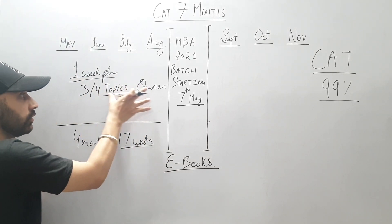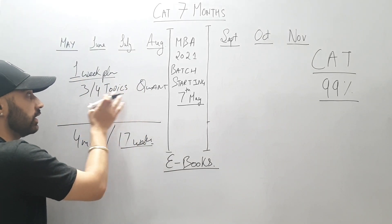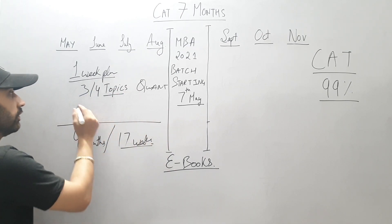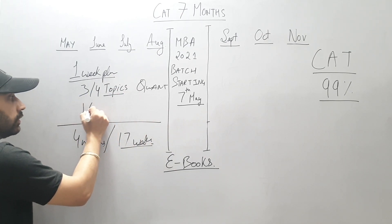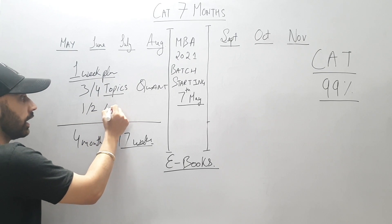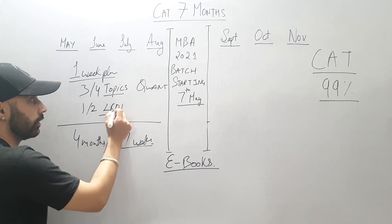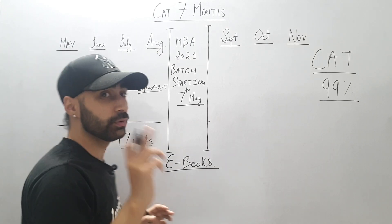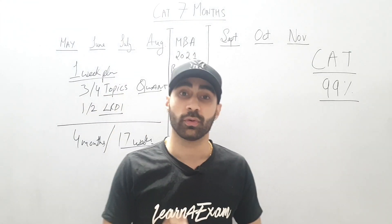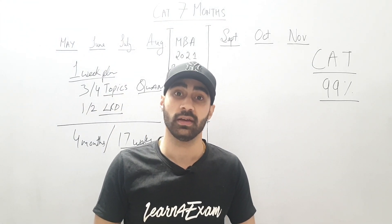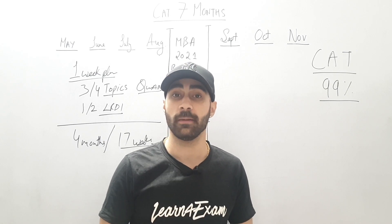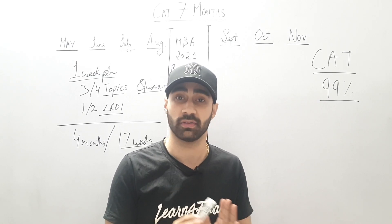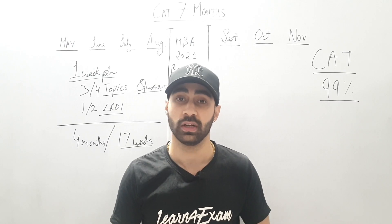I'm giving you a one-week plan. Whatever day suits you, plan accordingly. Plus every week you need to do one or two LRDI topics. And daily you need to do one RC, five Para Jumbles, and one hour of reading — or thirty minutes, whichever you can manage.